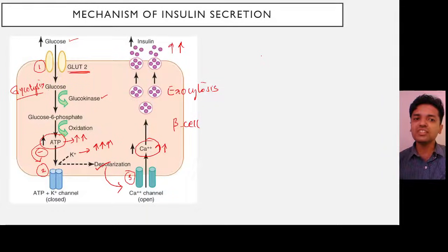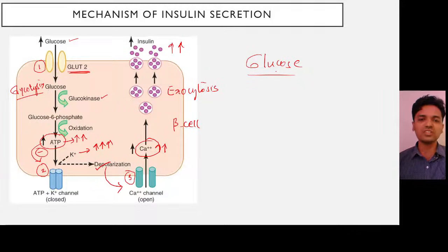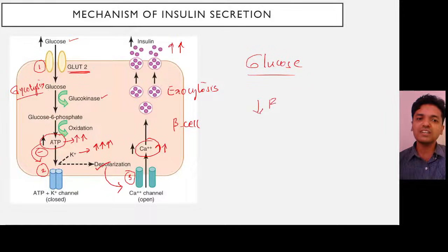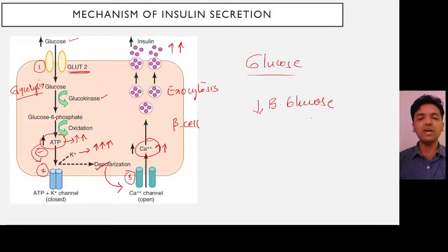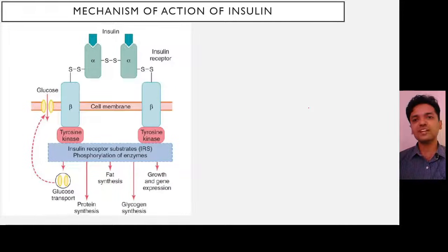So insulin secretion is dependent on glucose concentration. Now, what is the function of the insulin released from the beta cell? It has to decrease the blood glucose level. Let's see how insulin acts on different cells to reduce blood glucose — that is the mechanism of action of insulin.